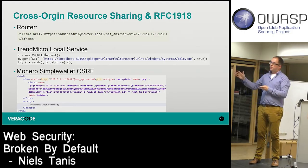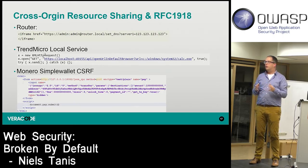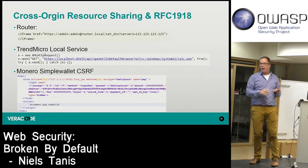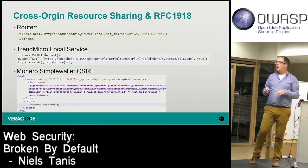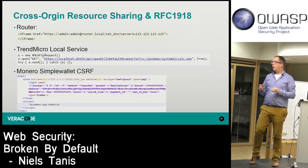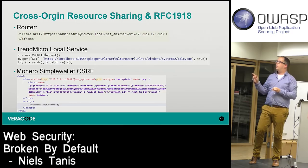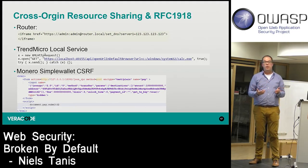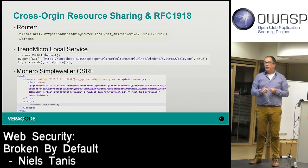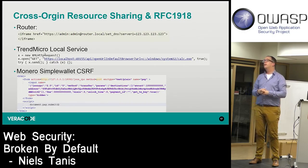The second example: a Google Project Zero researcher was testing antivirus software. A Trend Micro service installed on your machine runs on localhost on a specific port, takes a URL and executes it — potentially executing calc.exe or any action on your system. If this service is running and the CSRF payload is injected into a page, it executes without you noticing.